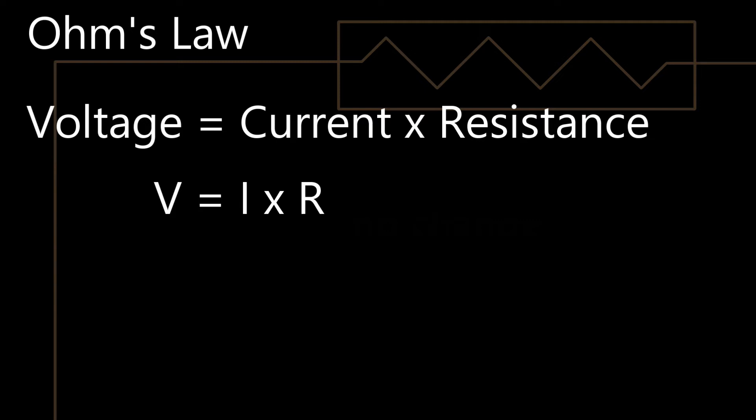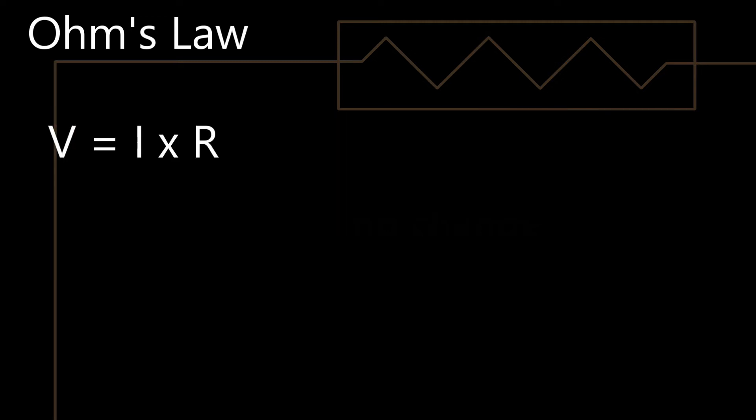So if you know any two of these values — V, I, or R — you can work out the third one. If you didn't know voltage, the formula is V equals IR (current times resistance). If you didn't know the current, it's I equals V divided by R. And if you didn't know the resistance, the formula is R equals V divided by I.